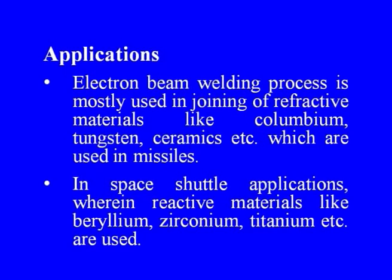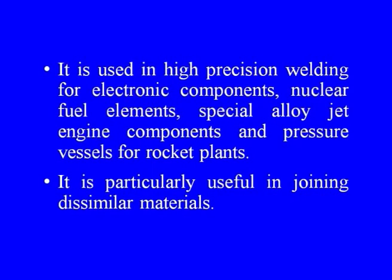The applications of electron beam welding include joining refractory materials like columbium, tungsten, and ceramics used in missiles. In space shuttle applications, reactive materials like beryllium, zirconium, and titanium are welded. The process is also used for high precision welding of electronic components, aluminum components, nuclear fuel elements, special alloy jet engine components, and pressure vessels for rocket plants. It is particularly useful in joining dissimilar materials.